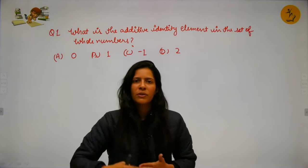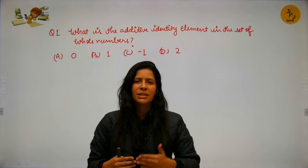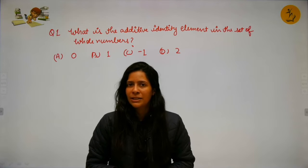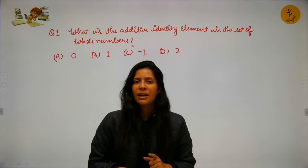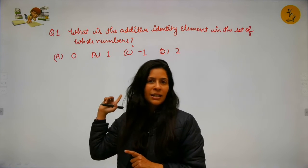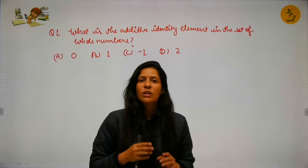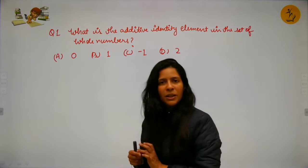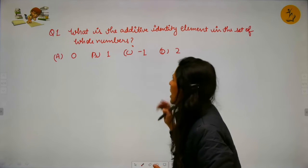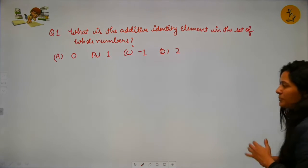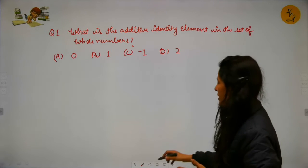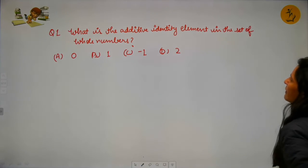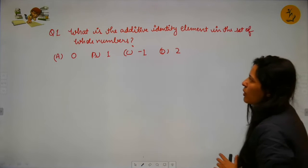In school exams you have to write the full procedure step by step, whereas in Olympiad exams you just need the correct answer. So since we are doing Olympiad-level questions, I have given four options and you have to find the correct answer. What is the additive identity element in the set of whole numbers? First, what are whole numbers? They start from zero — zero, one, two, three, four — all positive numbers.